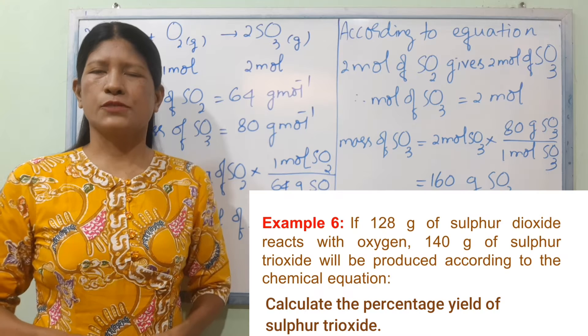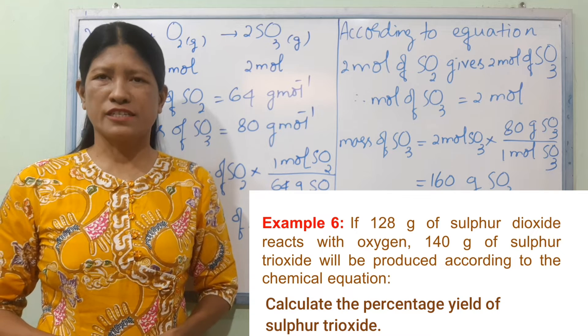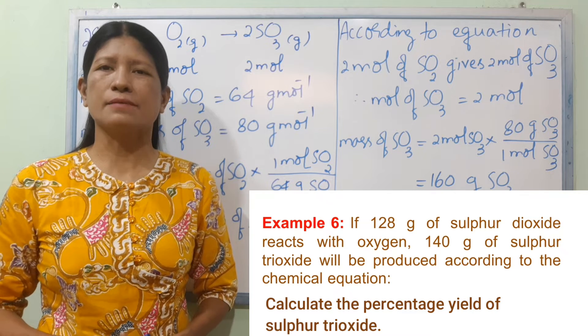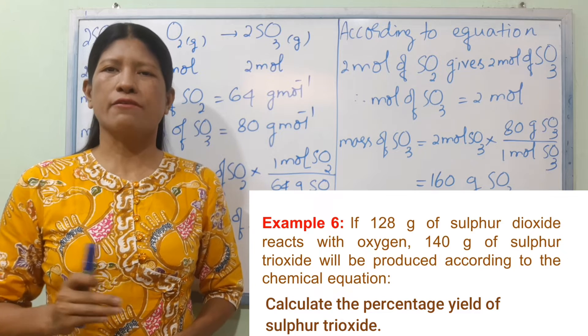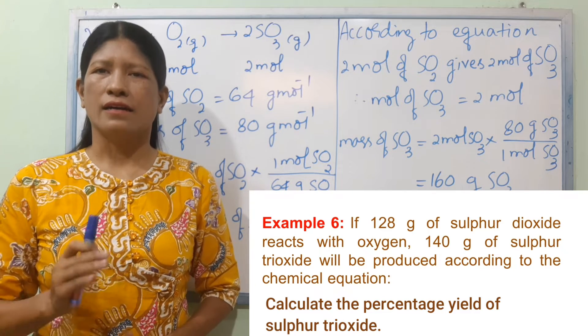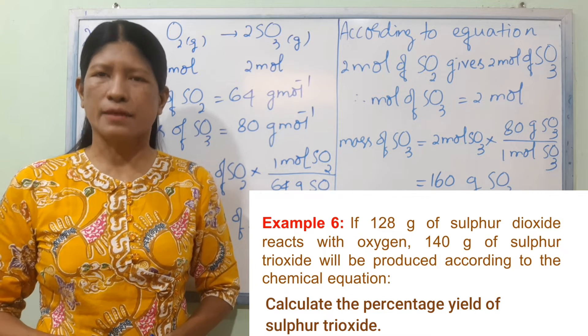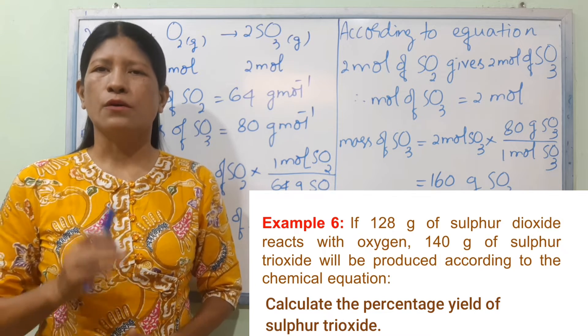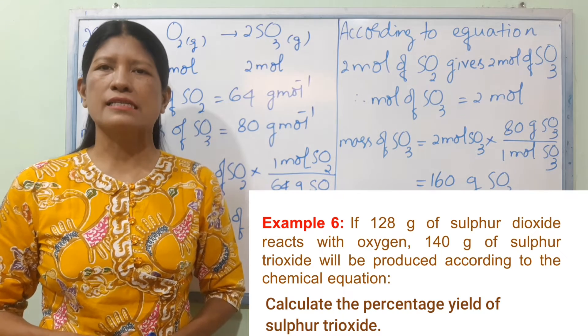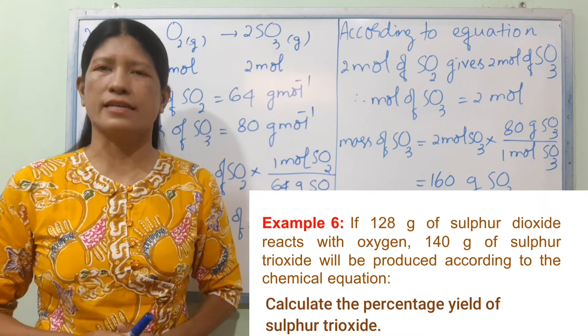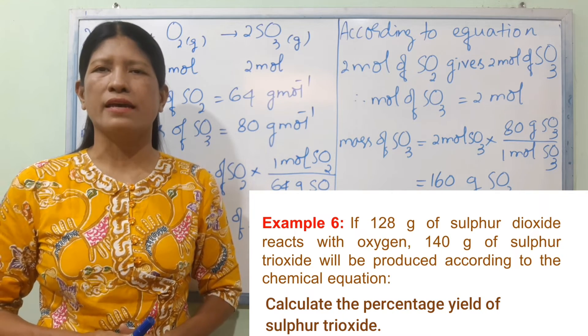This is example 6. We are given 128 grams of sulfur dioxide reacting with oxygen to produce 140 grams of sulfur trioxide gas.